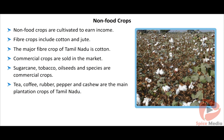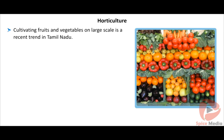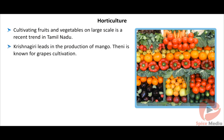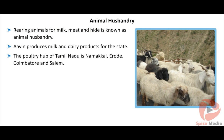Tea, coffee, rubber, pepper, and cashew are the main plantation crops of Tamil Nadu. In horticulture, cultivating fruits and vegetables on a large scale is a recent trend. Krishnagiri leads in mango production and Theni is known for grape cultivation. Animal husbandry — rearing animals for milk, meat, and hide — is also important. Aavin produces milk and dairy products for the state. The poultry hub of Tamil Nadu is Namakkal, Erode, Coimbatore, and Salem.